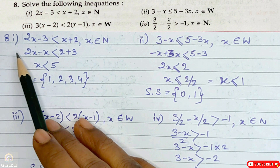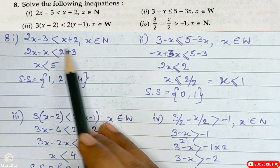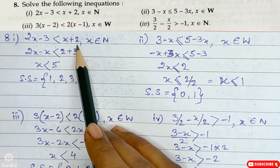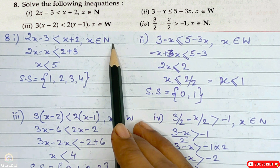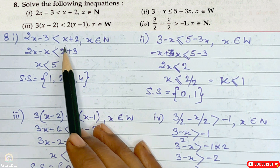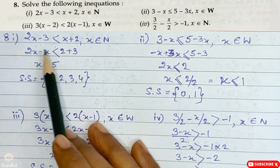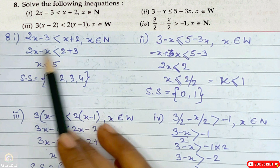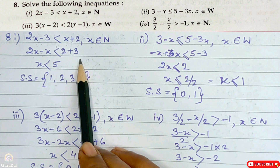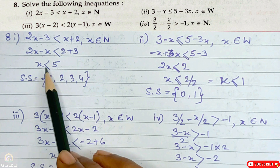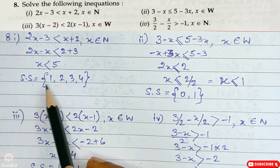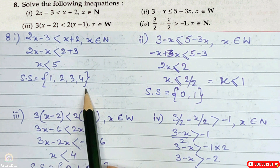Question number 8, the first part. The inequation is 2x minus 3 less than x plus 2, where x belongs to natural number. We bring all x terms to the left hand side — sign changes. So 2x minus x less than 2 plus 3. Therefore x is less than 5. Our solution set is 1, 2, 3 and 4.